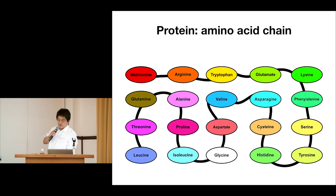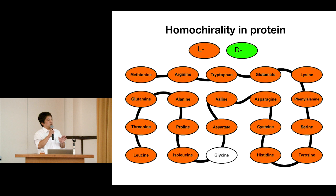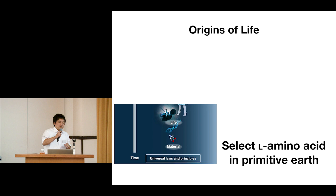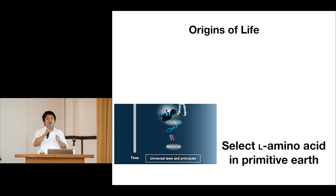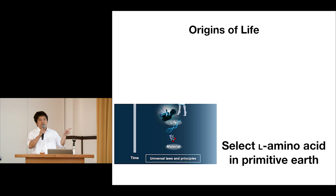Back to the protein and the amino acid chain — I separate the L-amino acid and the D-amino acid in our body. All amino acids are L-amino acid; glycine doesn't have chirality, but 90% of the amino acid form is only L. One of the big questions for life science is the reason for homochirality. On the primitive earth, there must have been both L and D-amino acid in equal amounts, but by some reason, only the L-amino acid was selected to make our body.